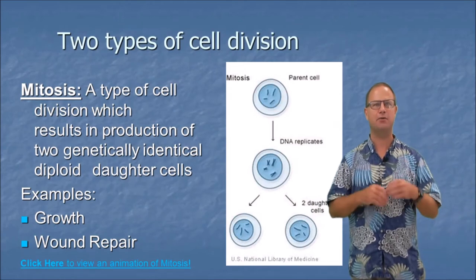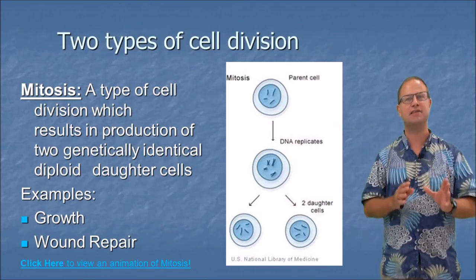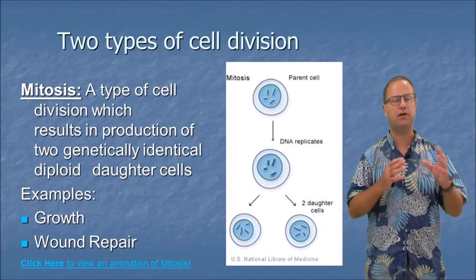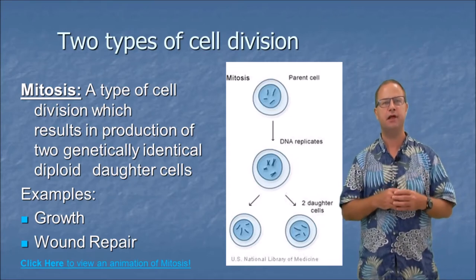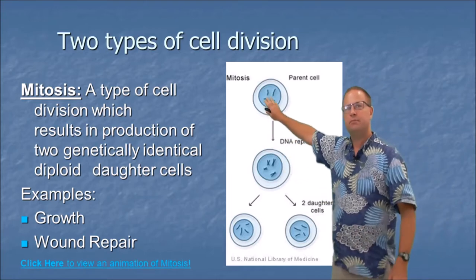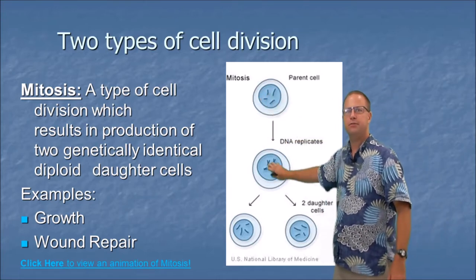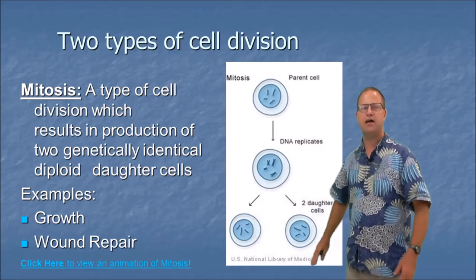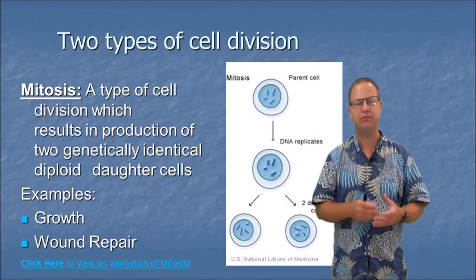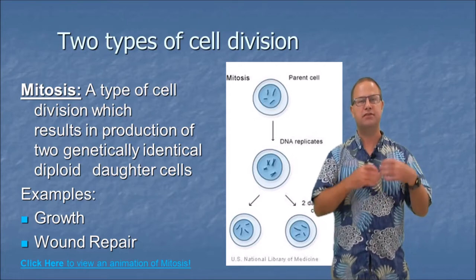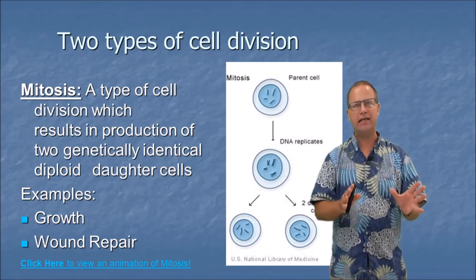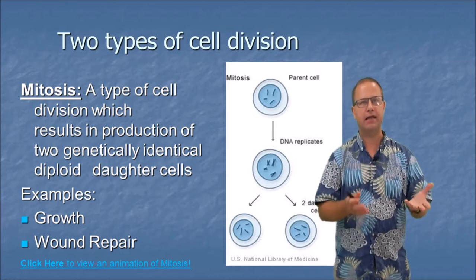Now we're going to take a break from that to talk about the bare bones of sex, starting with meiosis. But first we need to talk about mitosis. Mitosis is a type of cell division that results in the production of two genetically identical daughter cells. One mother cell divides through mitosis and we get two cells with the exact same genetic information, both diploid — having two copies of every chromosome. This happens when we grow new skin cells or repair a wound.